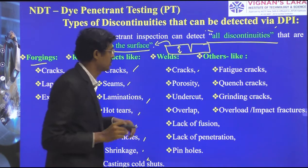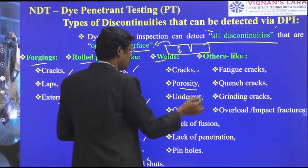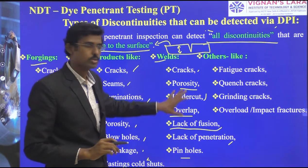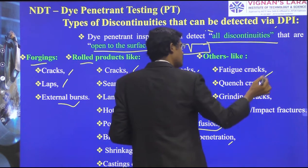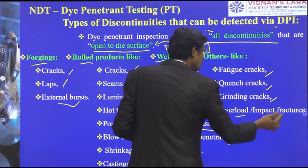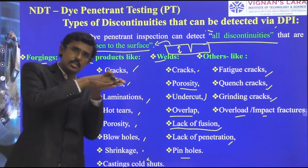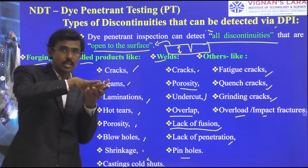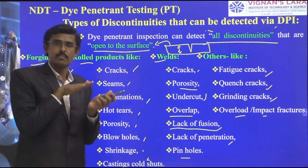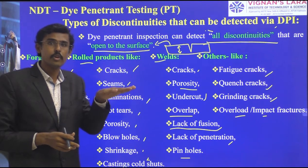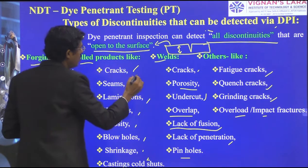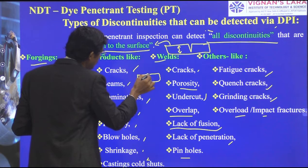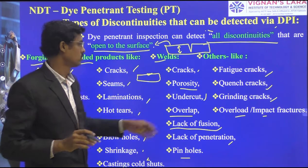We are not looking at inner subsurface defects. Fretting cracks, pincer cracks, grinding cracks, and overload impact cracks are also detectable. During grinding operations, the surface may not be uniform, creating irregularities. That bulge is still a surface feature, so a pinwheel indication will form there and grinding cracks can be found. Heavy grinding abrasion can also create cracks.